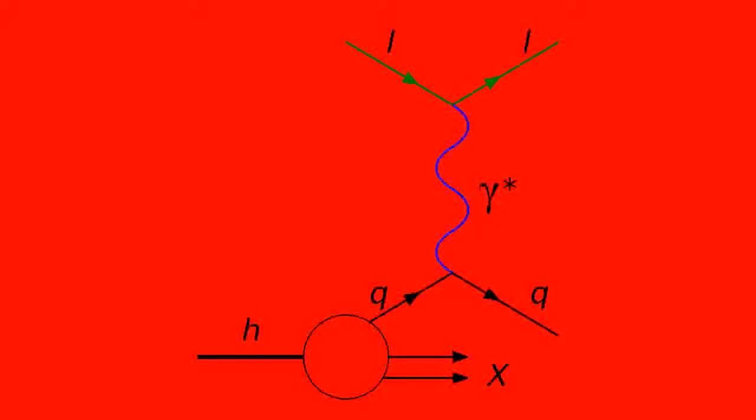So here is a public domain picture from the interweb of deep inelastic scattering. Don't be fooled by the presence of only three lines leaving the proton. These are partons we are talking about, not quarks. There could be more.